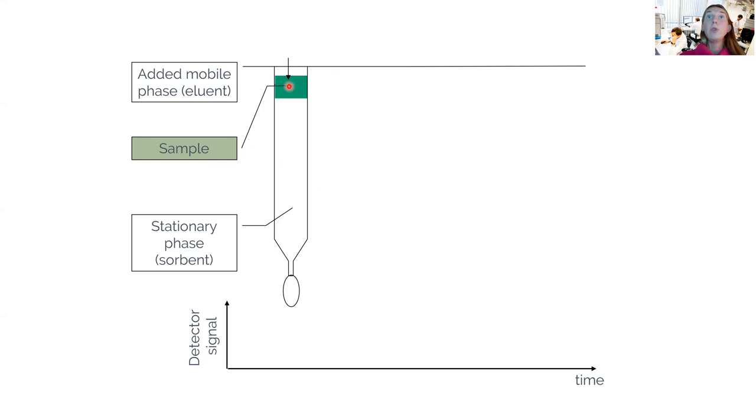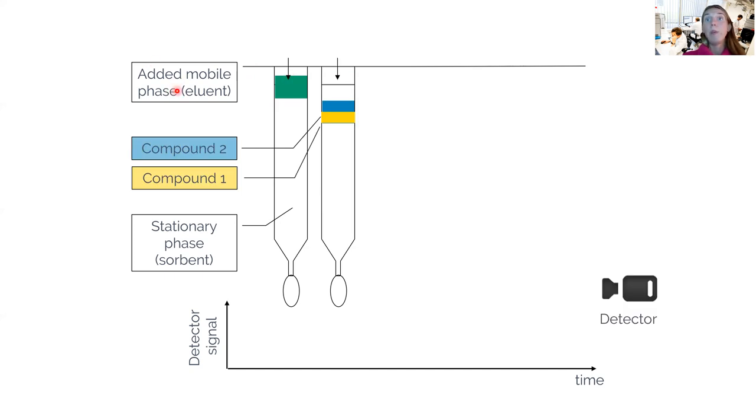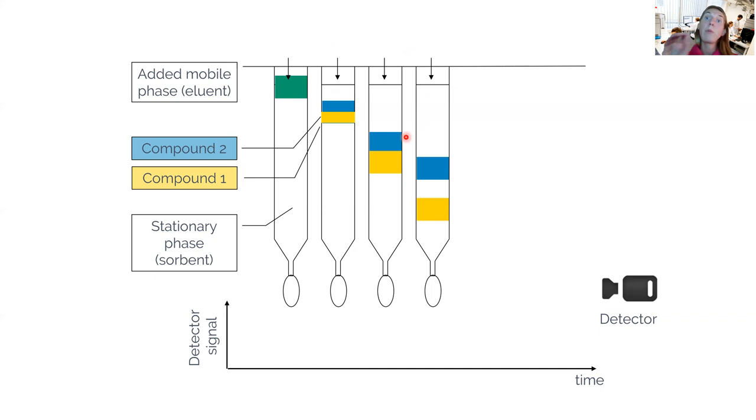We introduced the sample to the top of our column, and once we start applying the mobile phase, the sample starts moving through the column. If our sample is a mixture of compounds, then we start seeing that there are two different bands of the sample which belong to these two compounds. Our green extract is actually a mixture of compounds, one which appears as blue and the other which appears as yellow. We see that they start separating, and once we add more and more eluent, we see that these peaks separate more and more.